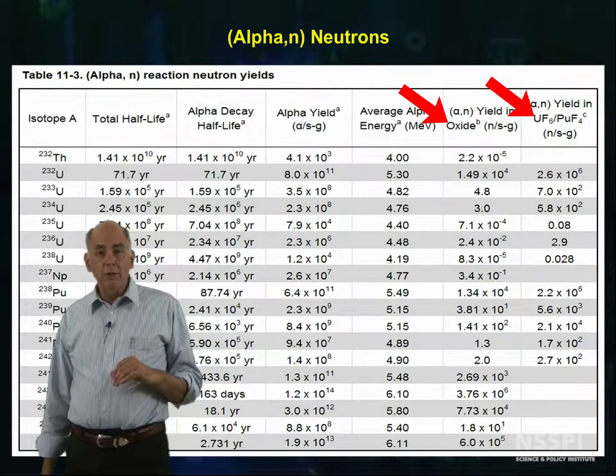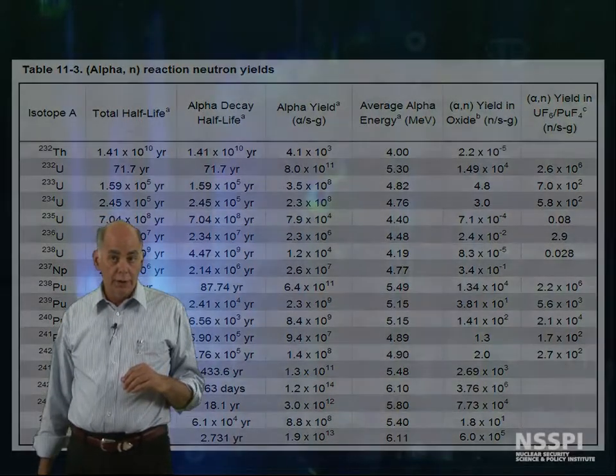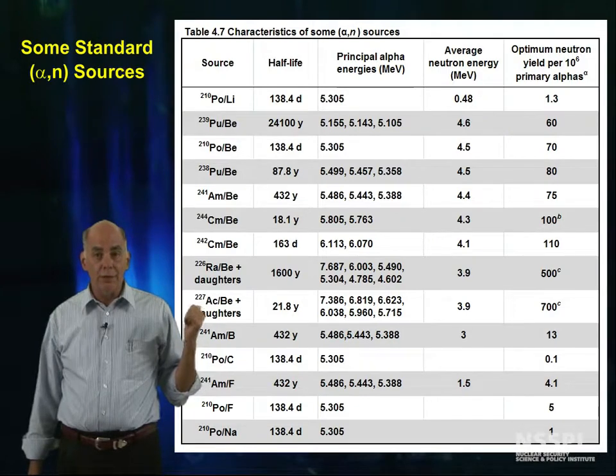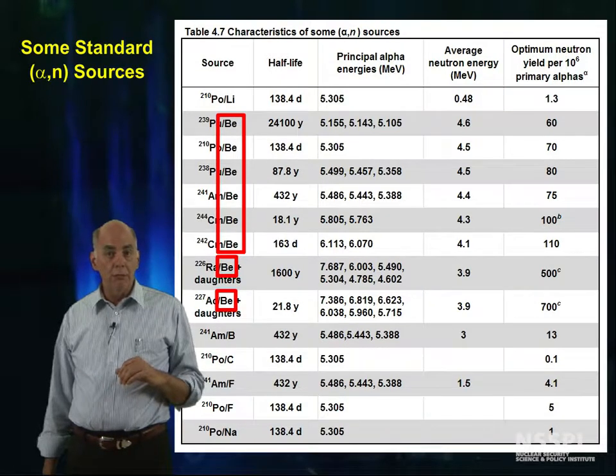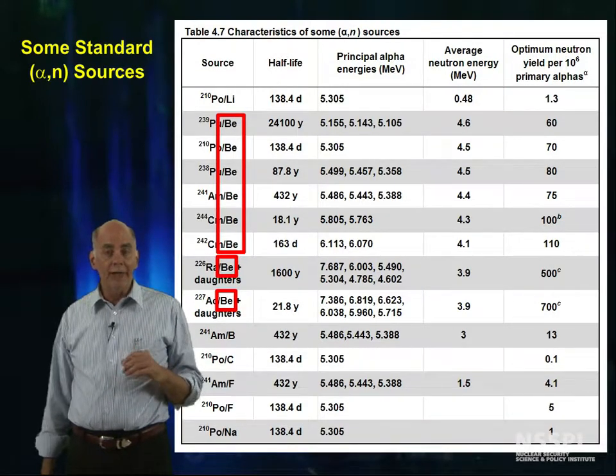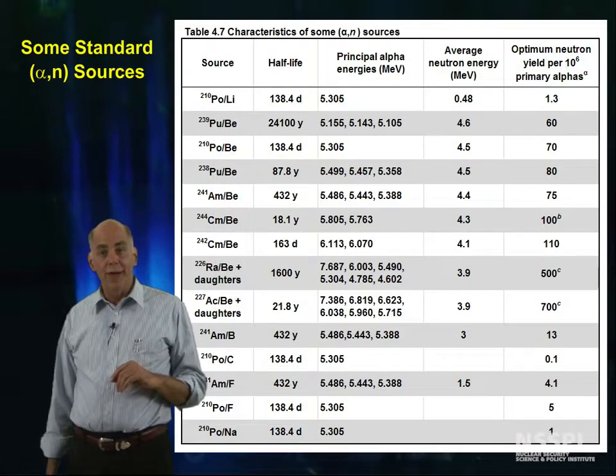Another thing we're interested in is how neutron sources can be produced. This table lists the common neutron sources, all of which are based on an alpha-N reaction. As you can see here, beryllium is an all-time favorite as a target because it readily produces neutrons.